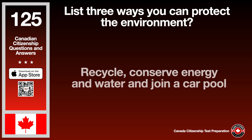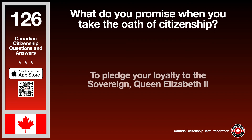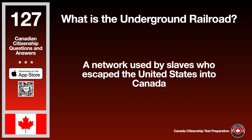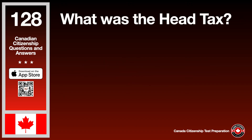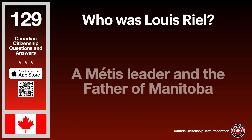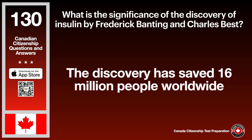List three ways you can protect the environment. The answer is recycle, conserve energy and water, and join a carpool. What do you promise when you take the Oath of Citizenship? The answer is to pledge your loyalty to the sovereign, Queen Elizabeth II. What is the Underground Railroad? The answer is a network used by slaves who escaped the United States into Canada. What was the head tax? The answer is a discriminatory race-based entry fee to Canada. Who is Louis Riel? The answer is a Métis leader and the father of Manitoba.